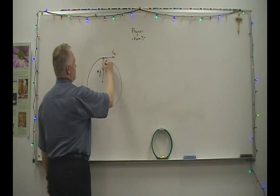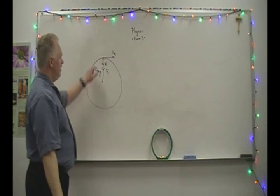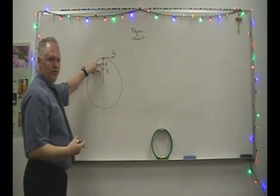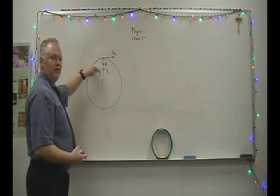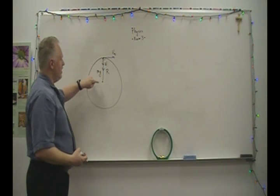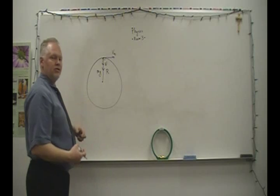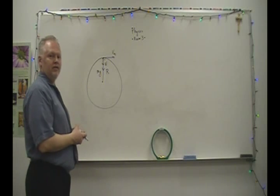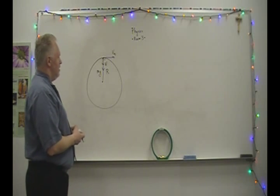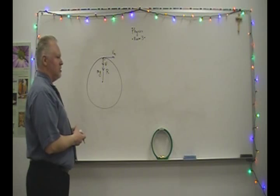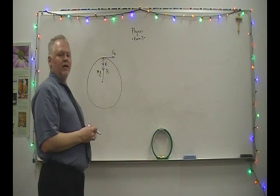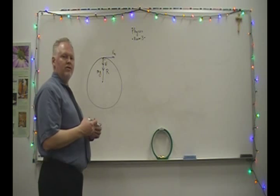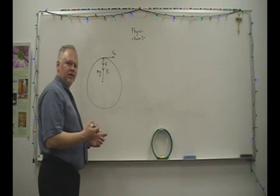The normal force of the surface pushing on the car is in the same direction as the weight, and these two forces are a net unbalanced force. We call it the centripetal force — a center-seeking force — and it produces a centripetal acceleration, a center-seeking acceleration. The centripetal force can be produced by many different forces, but it is an unbalanced net force that creates a center-seeking acceleration called the centripetal acceleration.